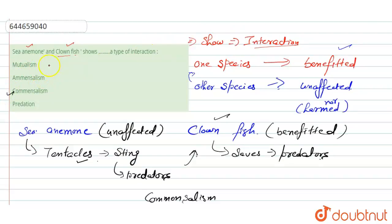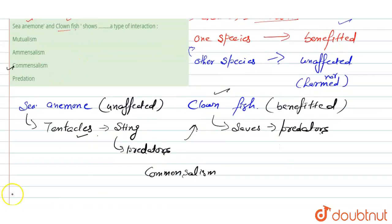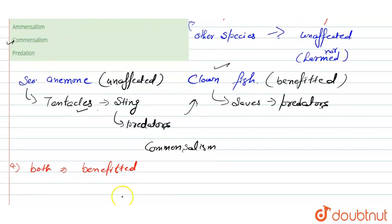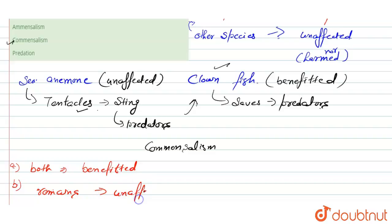Talking about the rest of the options: mutualism is the interaction where both species get benefited. Amensalism is the opposite of commensalism — here one organism remains unaffected while the other organism gets harmed.